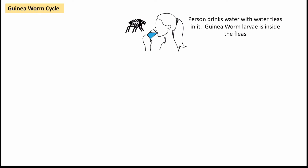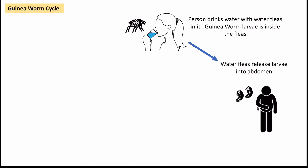First of all, I'm going to talk about how you actually get guinea worm and the cycle of progression. Starting with a person who's drinking from a local water source, this water unfortunately has water fleas in it. These tiny little water fleas actually carry larvae inside them. And when they get inside the body, the fleas release that larvae, which often congregates in the abdomen of a human being.